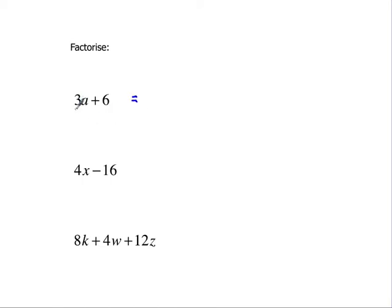First of all, we're going to take out the common factors — what's in both of these. What's in both of them is the number 3, because 3 goes into 3 and 3 goes into 6. So I'm going to have 3 lots of something. 3 lots of something must be 3a, so that must be a, because 3 lots of a would be 3a.